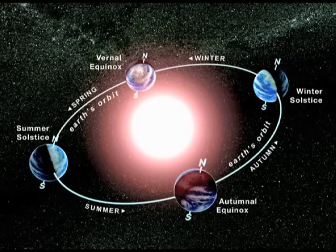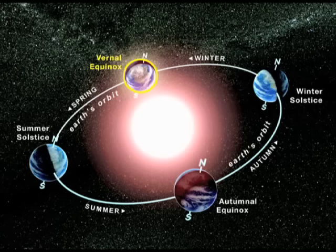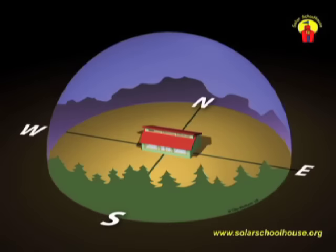As the Earth travels back toward summer, it passes another point where the axis is tilted sideways to the sun. Once again, day and night are the same length. This day is called the vernal equinox. Let's see how this looks from the Earth's surface. We can think of the sky as a huge dome above our heads, and imagine the sun's path traveling across the inside of this sky dome.